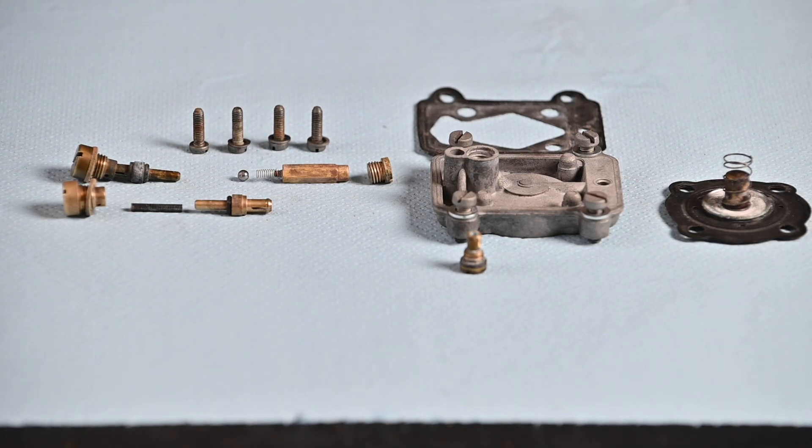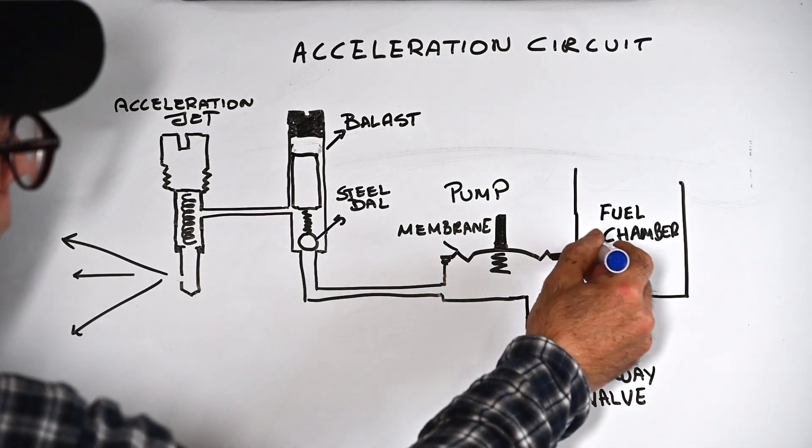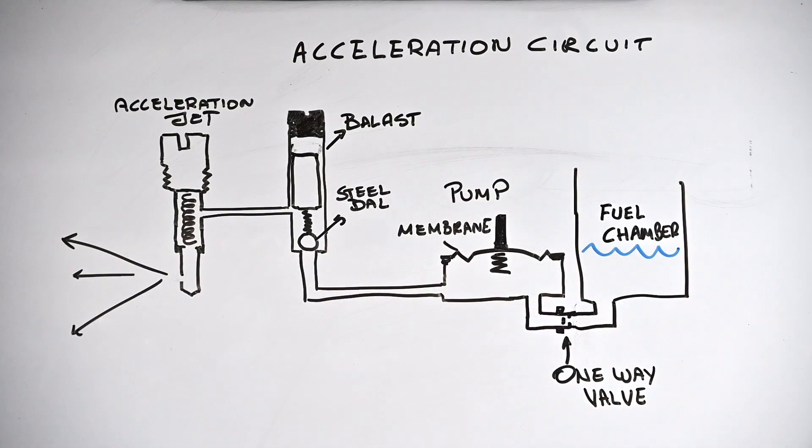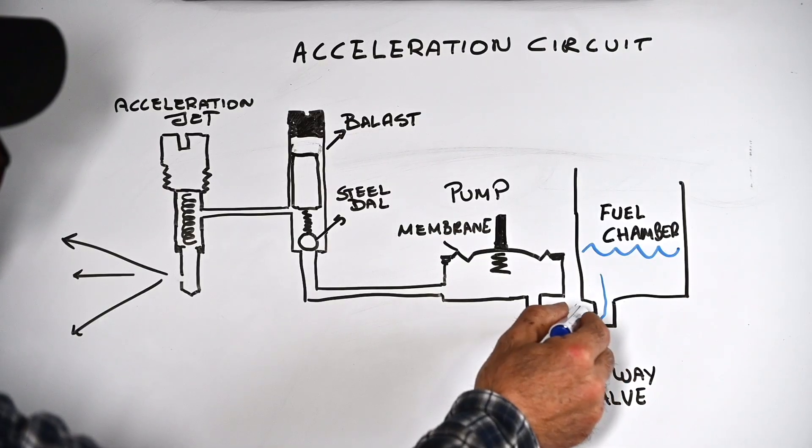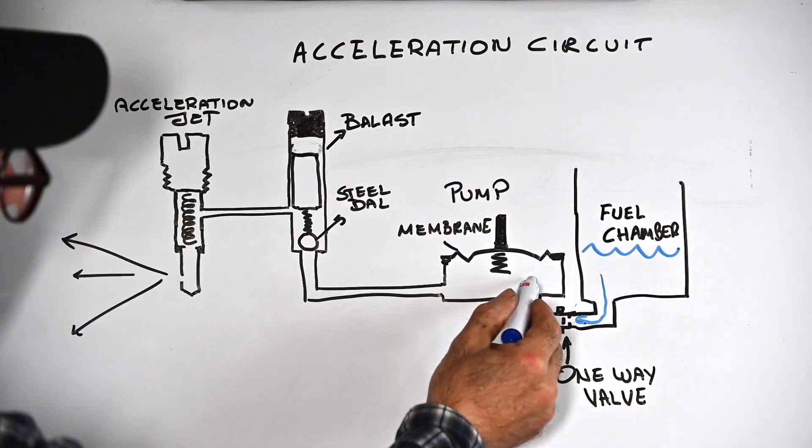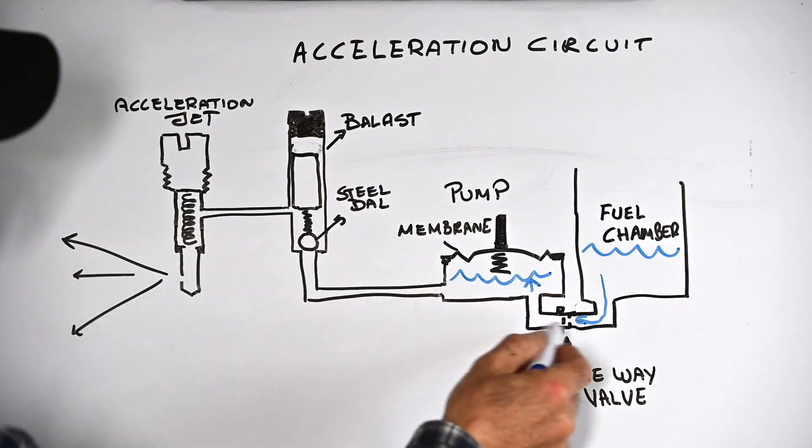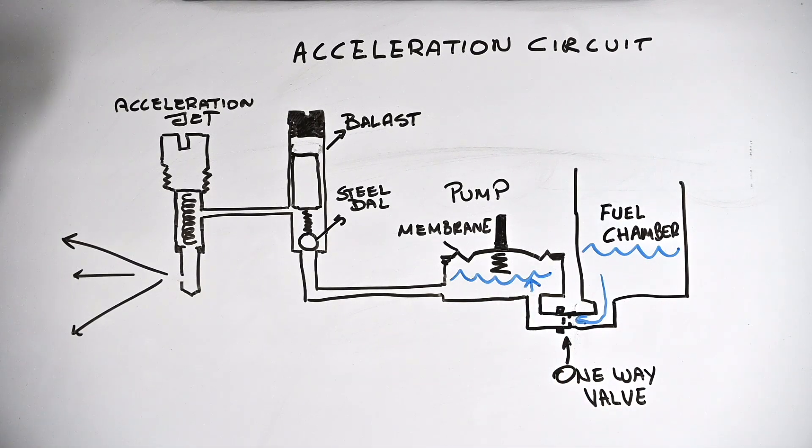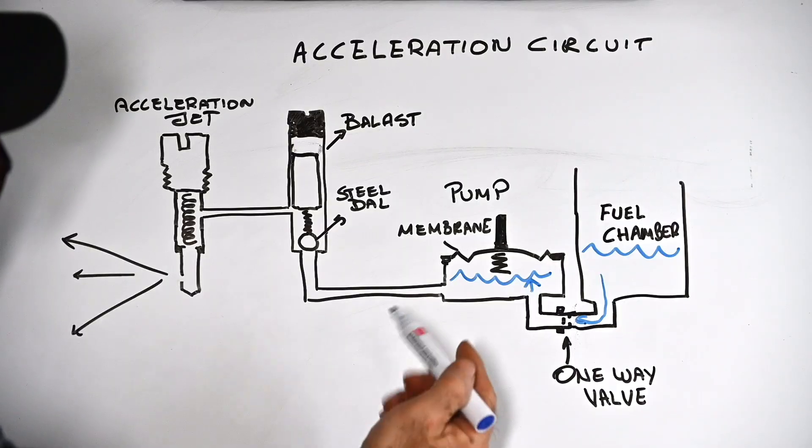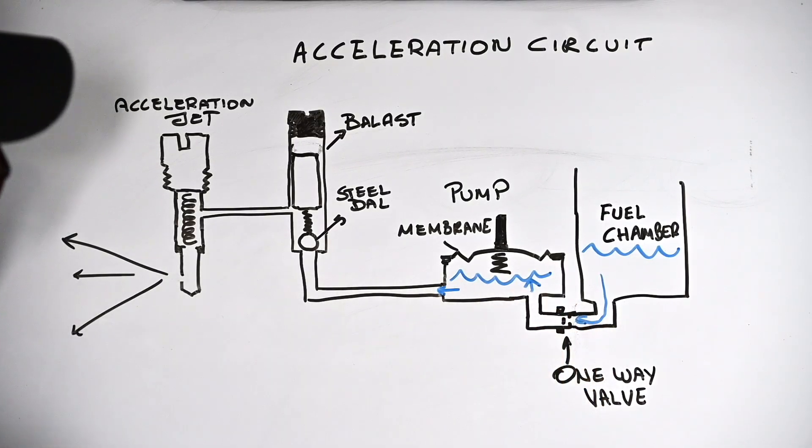So now let's go to the board and see how that works. Here we have our acceleration circuit. We are having a fuel chamber which is filled with fuel, and fuel will actually get through a one-way valve, which I've shown you just a minute ago, into the acceleration pump. So fuel will be sitting in here. Fuel cannot get back because it's a one-way valve, so if we depress the membrane, then fuel only has one way out which is this way. It can't get out that way because the valve will block it.